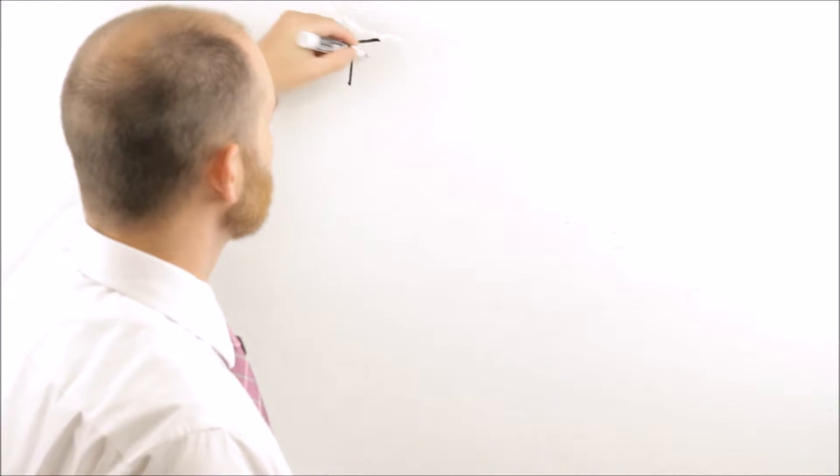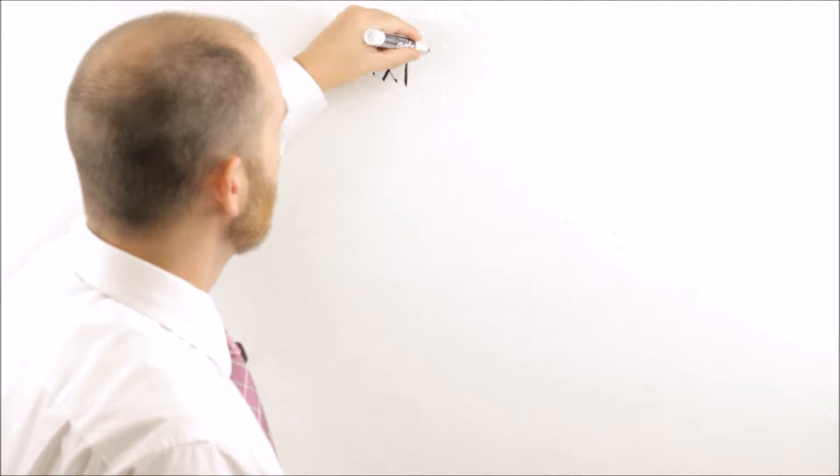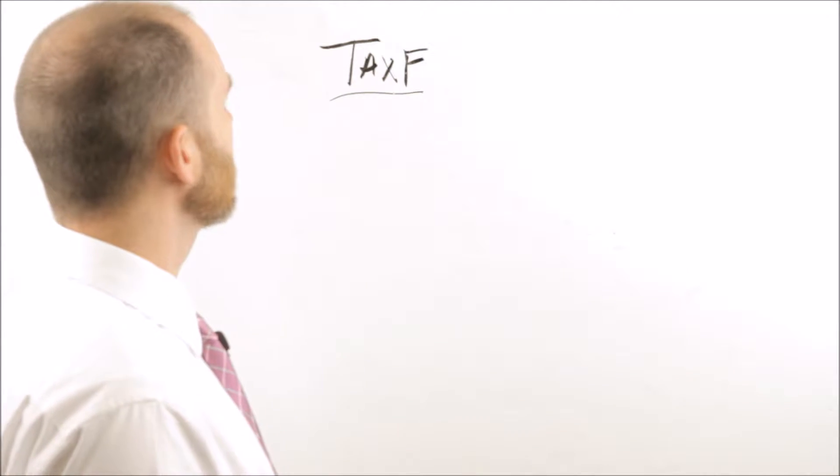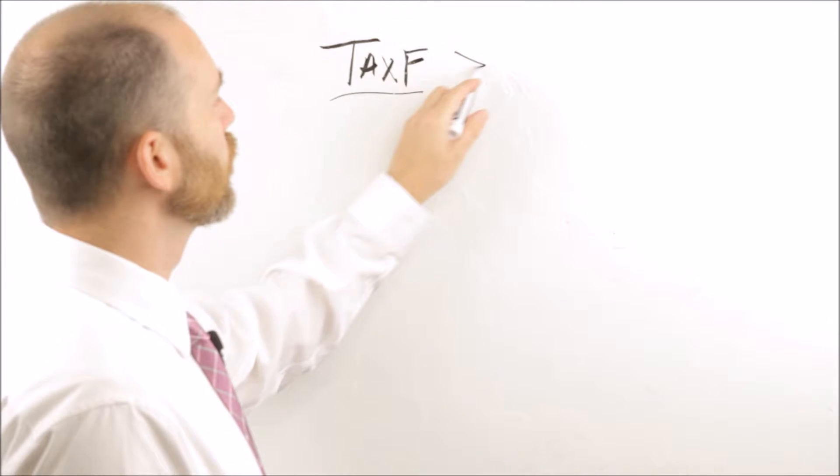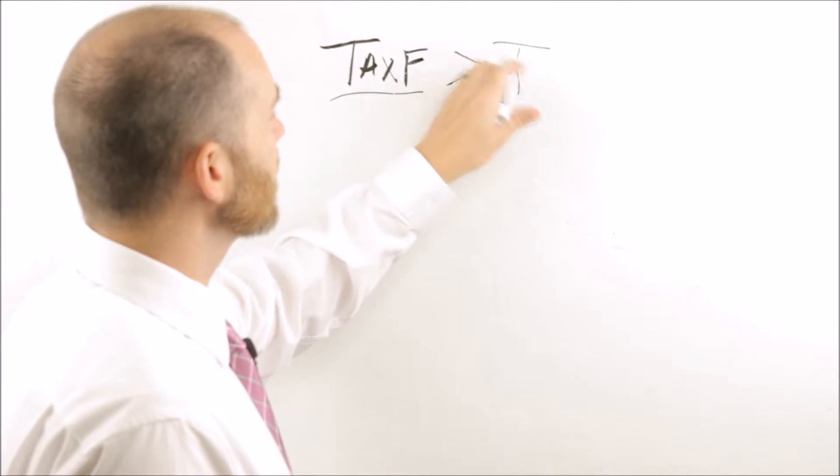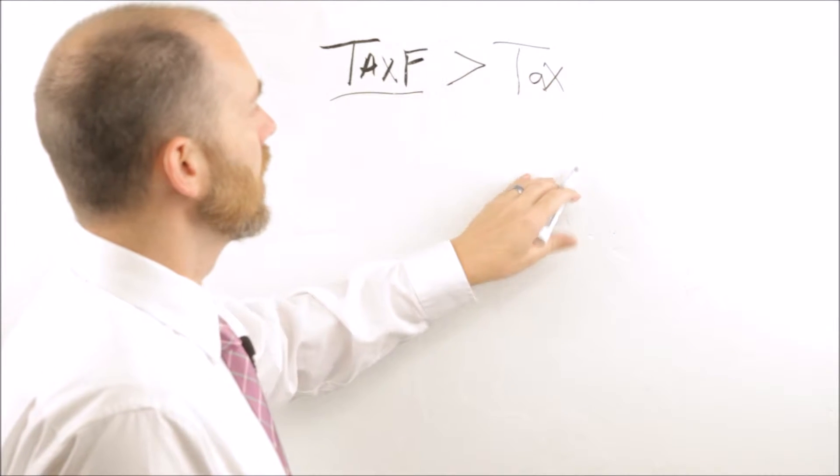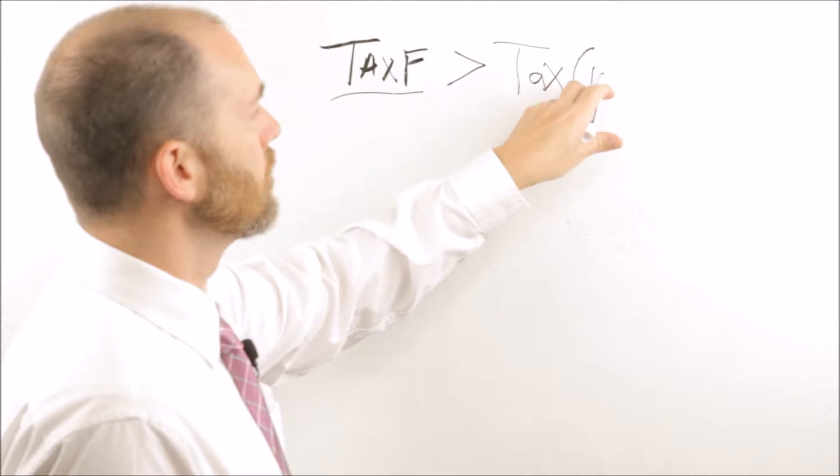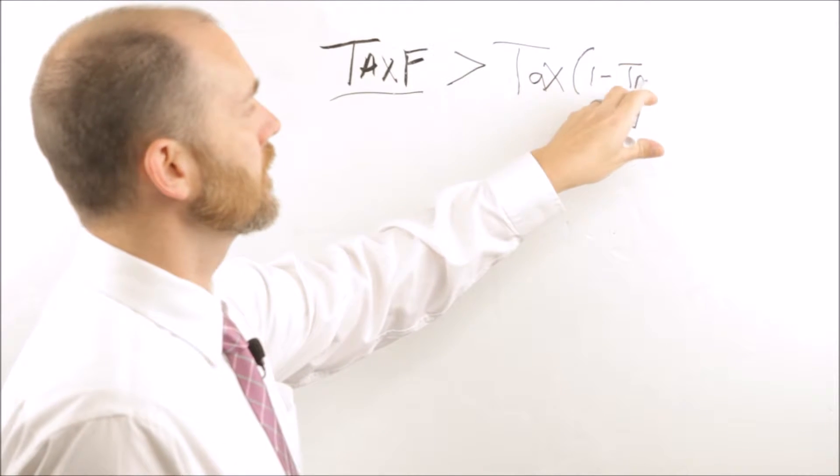If you were able to invest in a tax-free bond, we'll label it tax F, and that's greater than the taxable bond, but the taxable bond is one minus the tax rate.